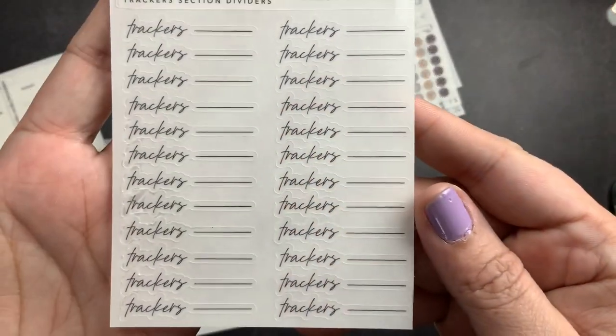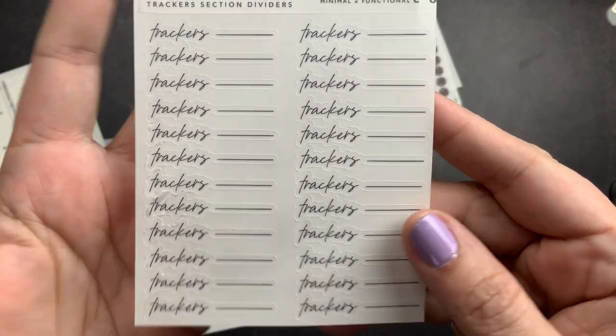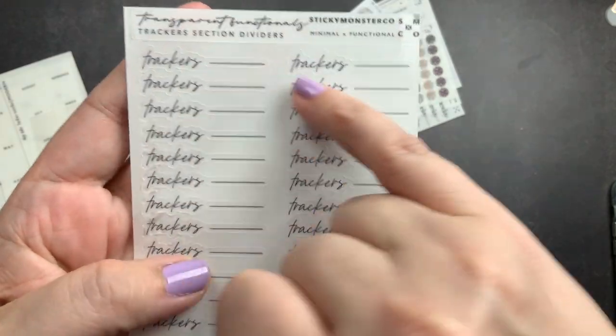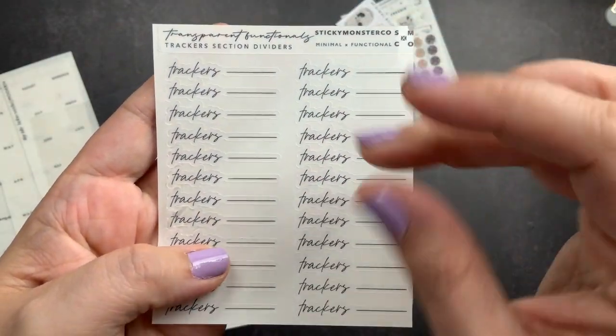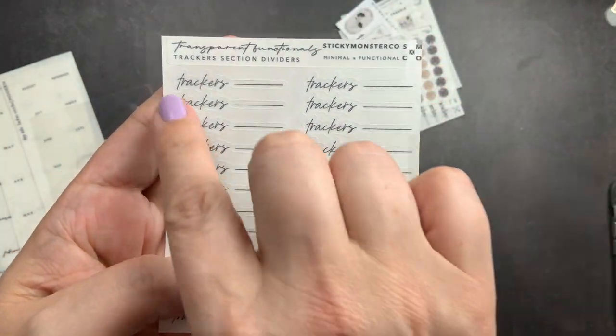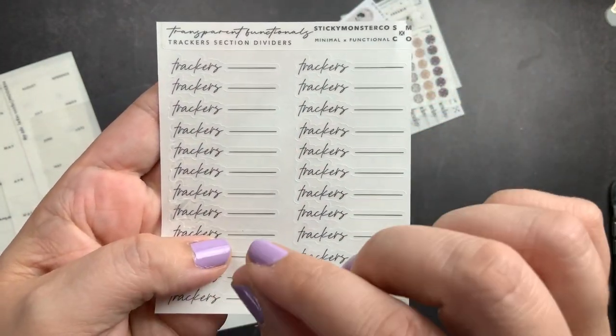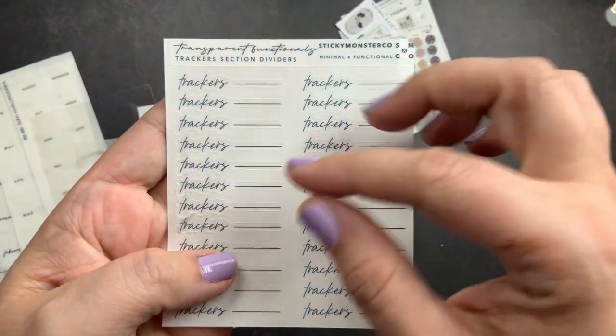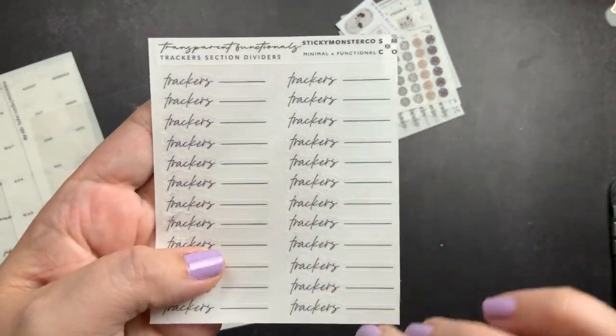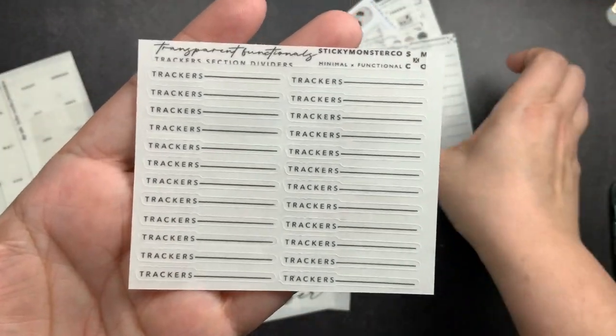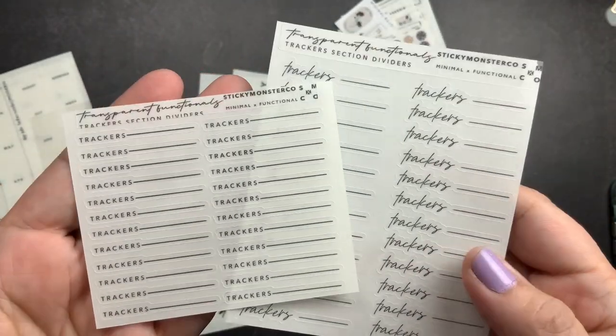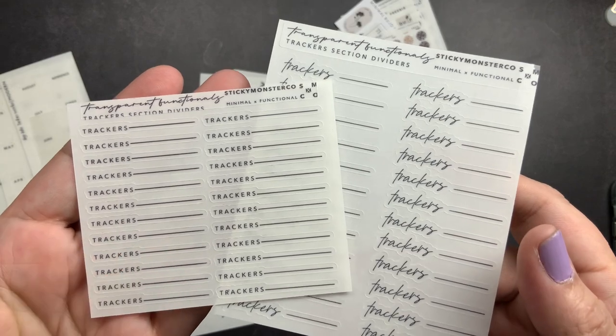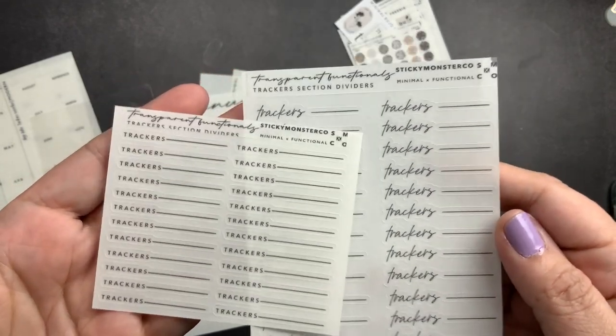So we'll continue with stickers. So I got this trackers section divider. So it says trackers and then it has a line. So you can lay it in your Hobonichi Weeks or your cousin or your Sterling Ink, wherever it is that you're doing your tracking. You stick this at the top of where you're going to put your tracker section. And it has a little line to create a divider and then you put your trackers underneath. And then I got the same thing in a different font with a longer line. So you could choose your line length. I got one in a scripty font and one in a sans serif font with two different lengths of lines.